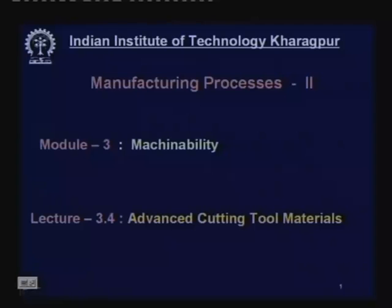Welcome to the course Manufacturing Process 2. We are continuing module 3 on machinability, and this is the last lecture under machinability. Today's lecture, number 3.4, covers advanced cutting tool materials. Cutting tools play a very important role in manufacturing, and the material has a significant effect. Last lecture we covered conventional cutting tool materials; today we shall cover the advanced cutting tool materials.